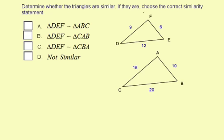Determine whether the triangles are similar. If they are, choose the correct similarity statement. We have no angles marked, only side measures, so we're going to be dividing sides.